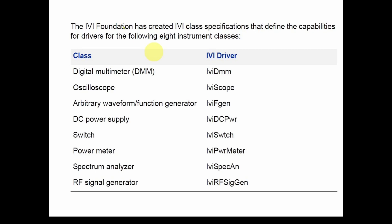The IVI Foundation has created IVI class specifications that define the capabilities for drivers for eight instrument classes. If you've done C# object-oriented programming or any other object-oriented programming, you realize how nice it would be to have a class for each type of device. In fact, they already have it. For example, for a digital multimeter there is IVI-DMM; for our oscilloscope, IVI-Scope; waveform function generator, IVI-FGen; and so on. It's a wonderful aspect of IVI that you can access them via these simple classes.